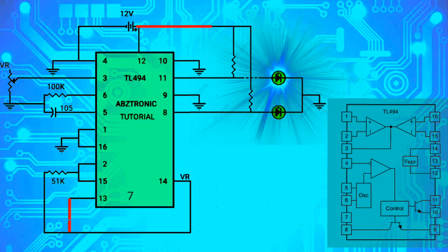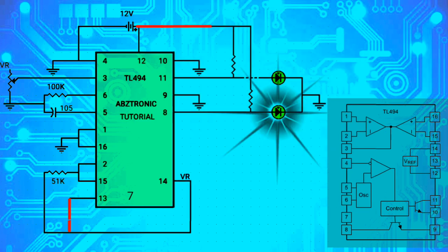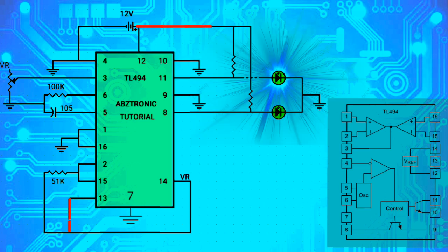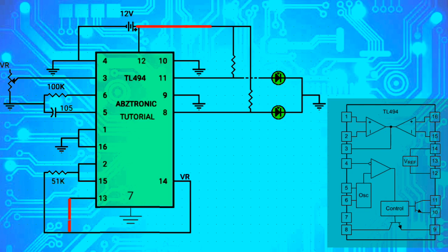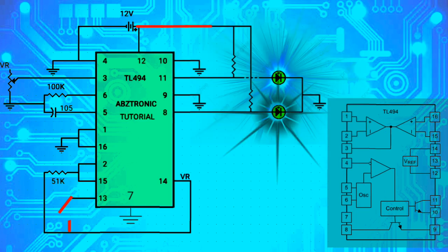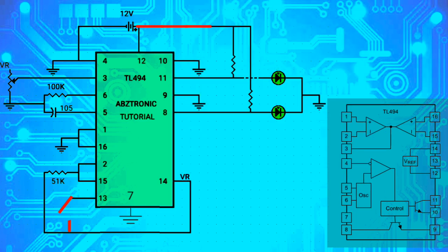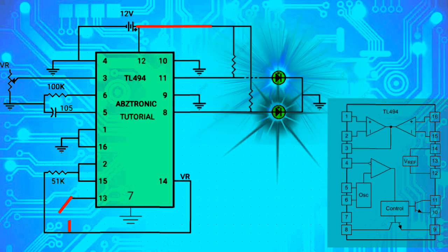When pin 13 is disconnected from pin 14, the outputs switch to push-pull mode. You can see the output will alternate — one on while the other is off. Now let's test this in the actual circuit.